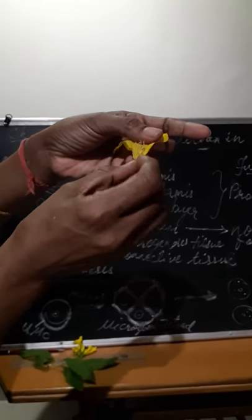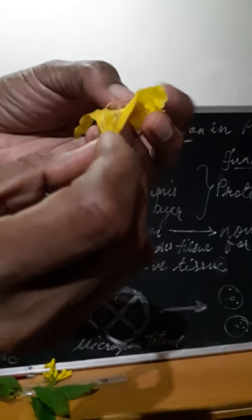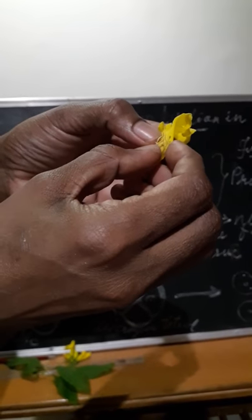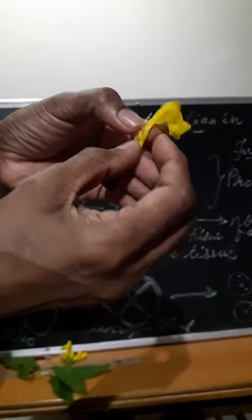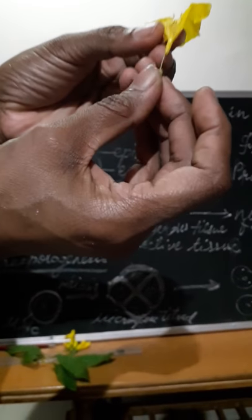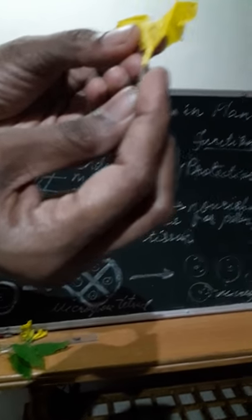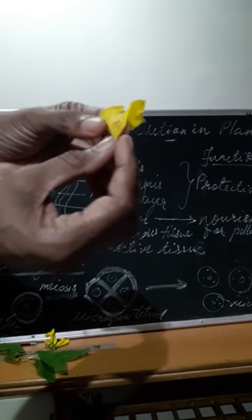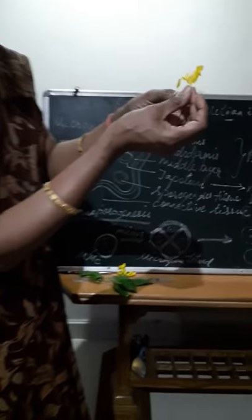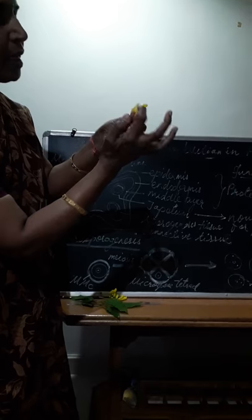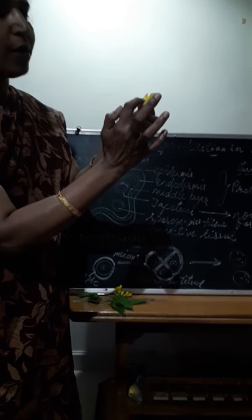The third accessory part is stamens together, we call it as androecium. You can see this, these are the filaments. The fourth accessory whorl is carpels or pistil, you can see here which is coming out, this part. This is Gynoecium, female reproductive part. Now you have learnt the four accessory whorls. The outermost sepal, second is petal, third androecium and fourth one is Gynoecium.